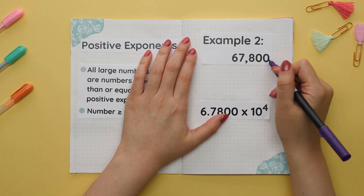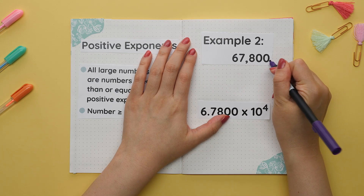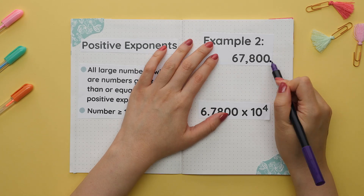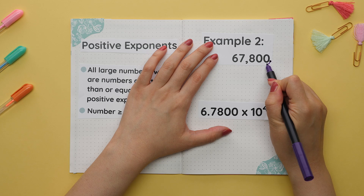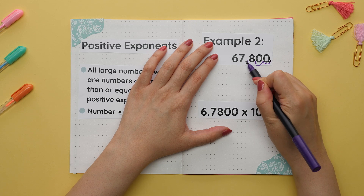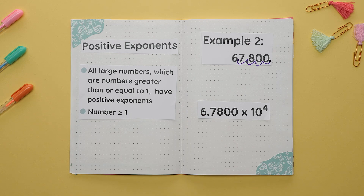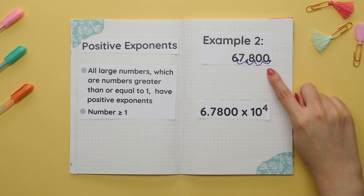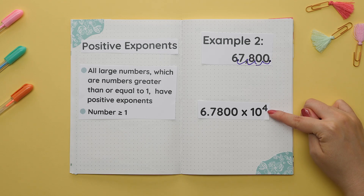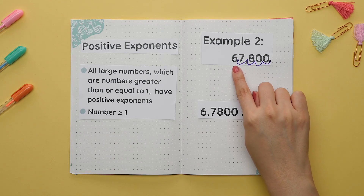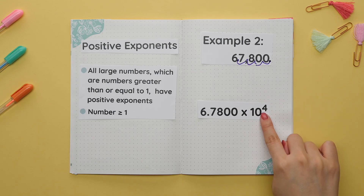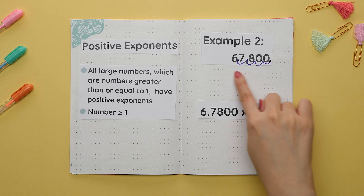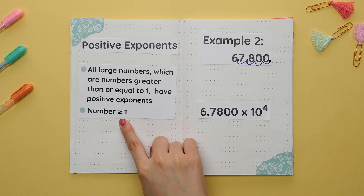We will first move the decimal place over until we reach a number that is not zero. So we will move the decimal to the left one, two, three, four times and rewrite the number. We now have 6.7800. Since we moved the decimal over four times, our exponent will be four. It's positive because this is a large number, or a number that is greater than or equal to one.